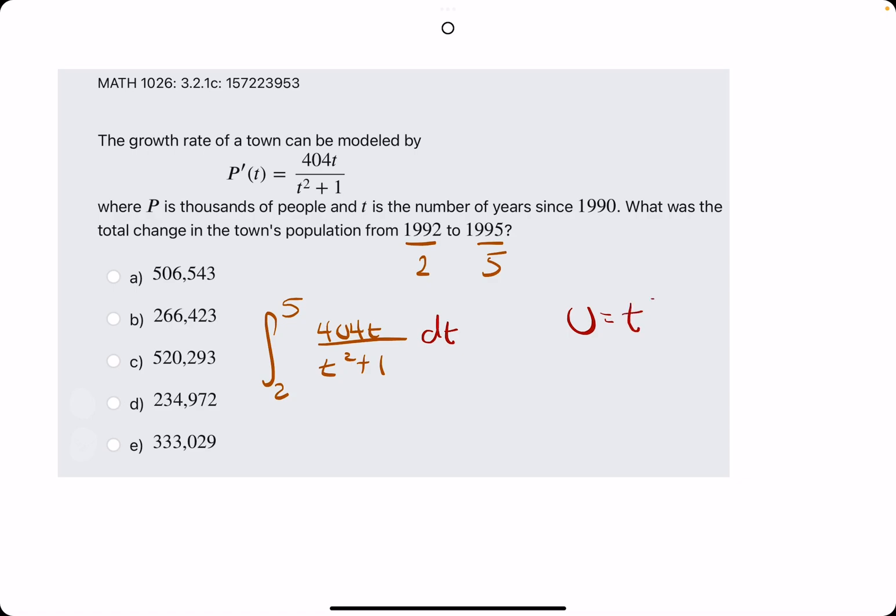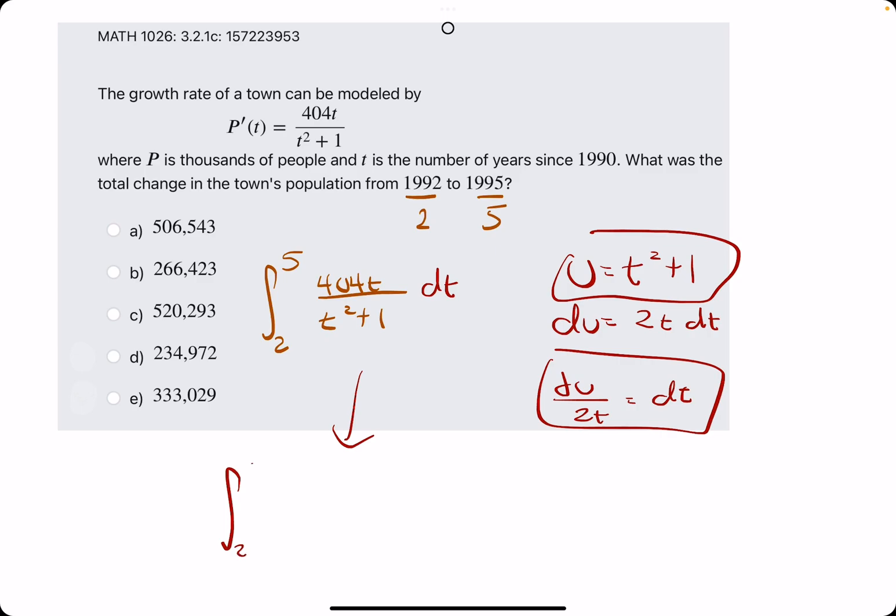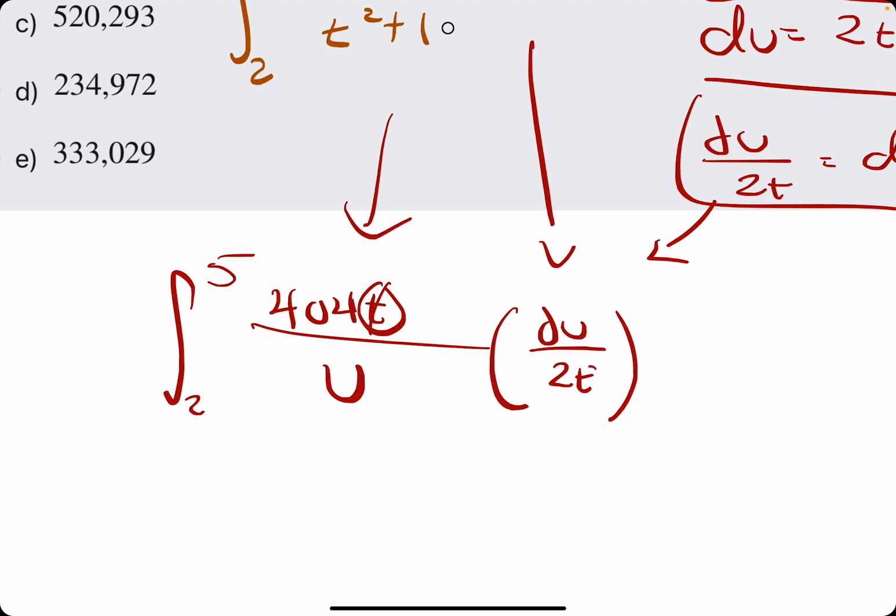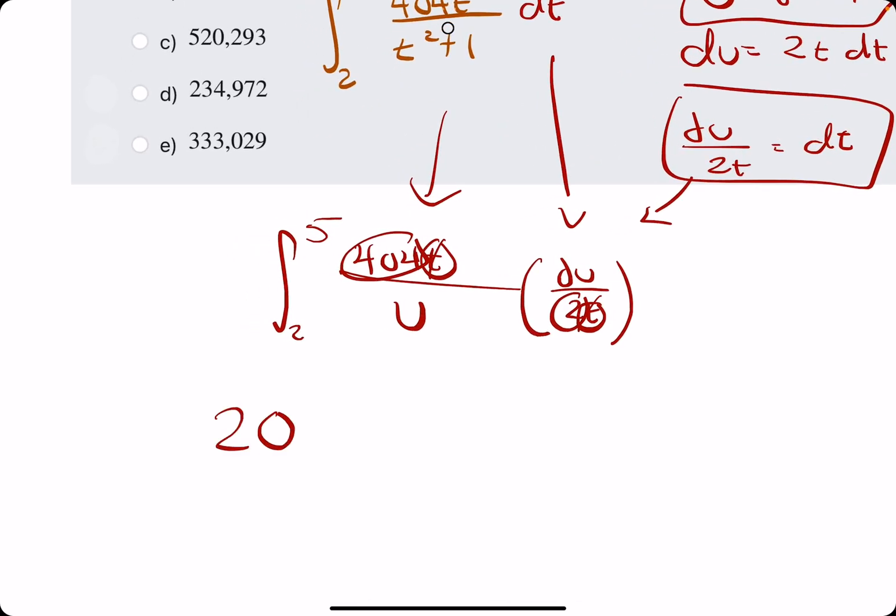So again, using U-substitution, we have T squared plus 1. DU is the derivative, which is 2T. We tack on DT. We solve for DT. We rewrite our integral 2 to 5. 404T all divided by U. And then in place of DT, we sub in DU over 2T. That allows us to cancel the T on top and bottom. We gather the numbers.